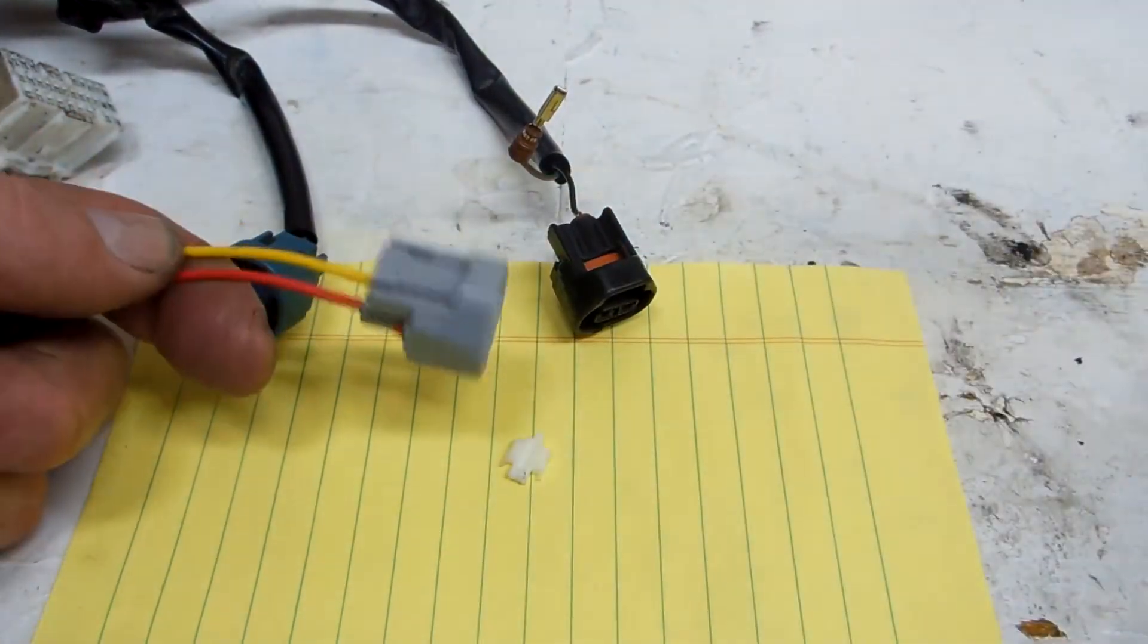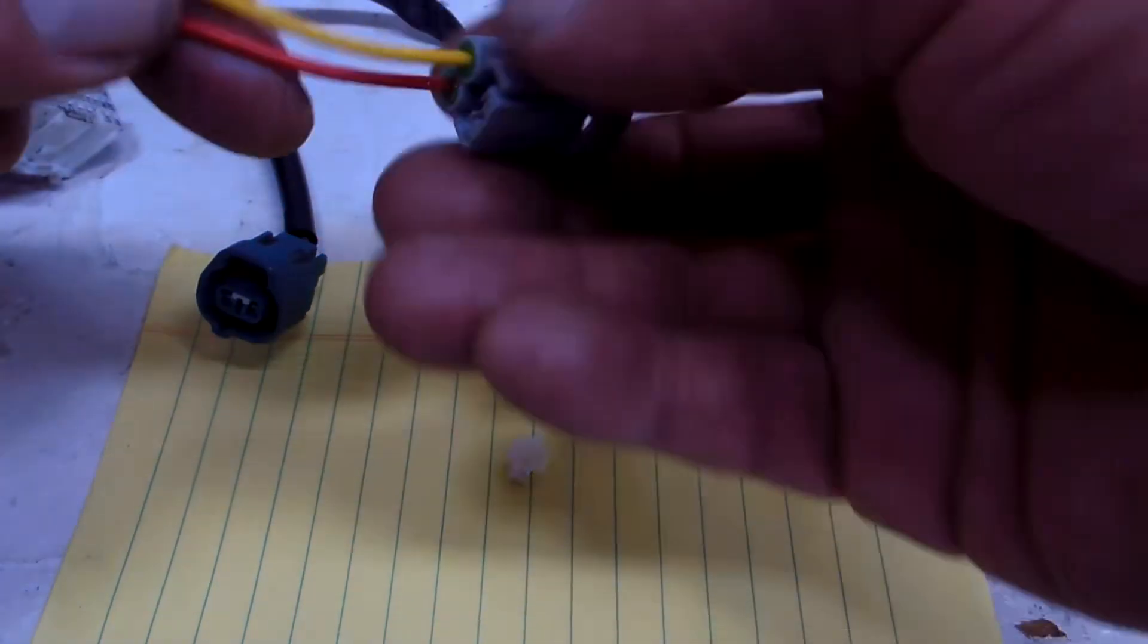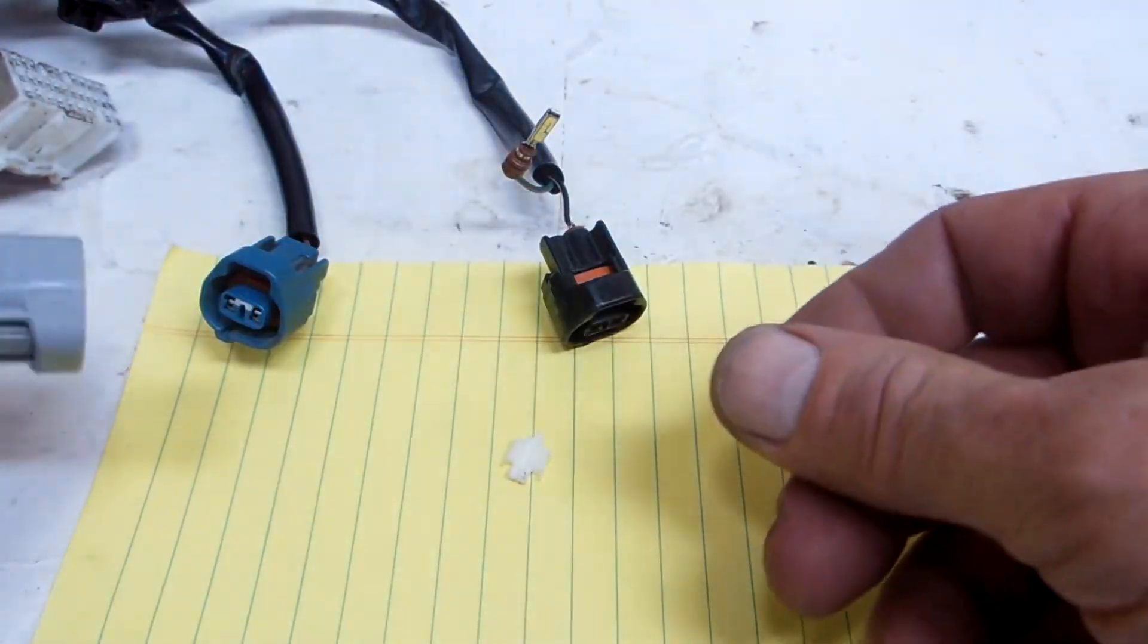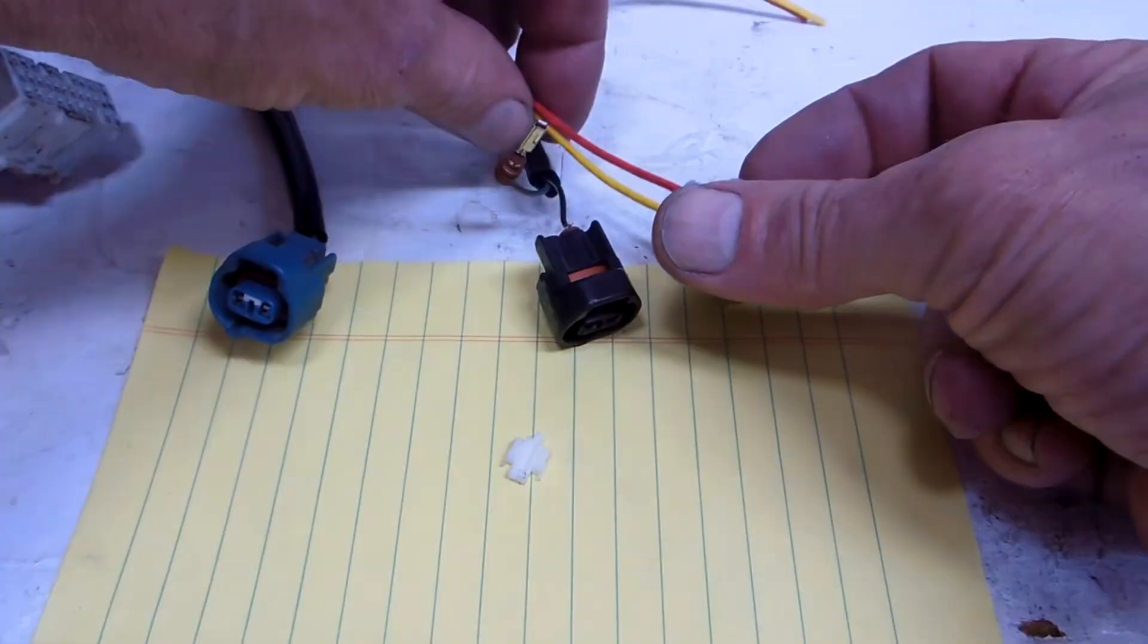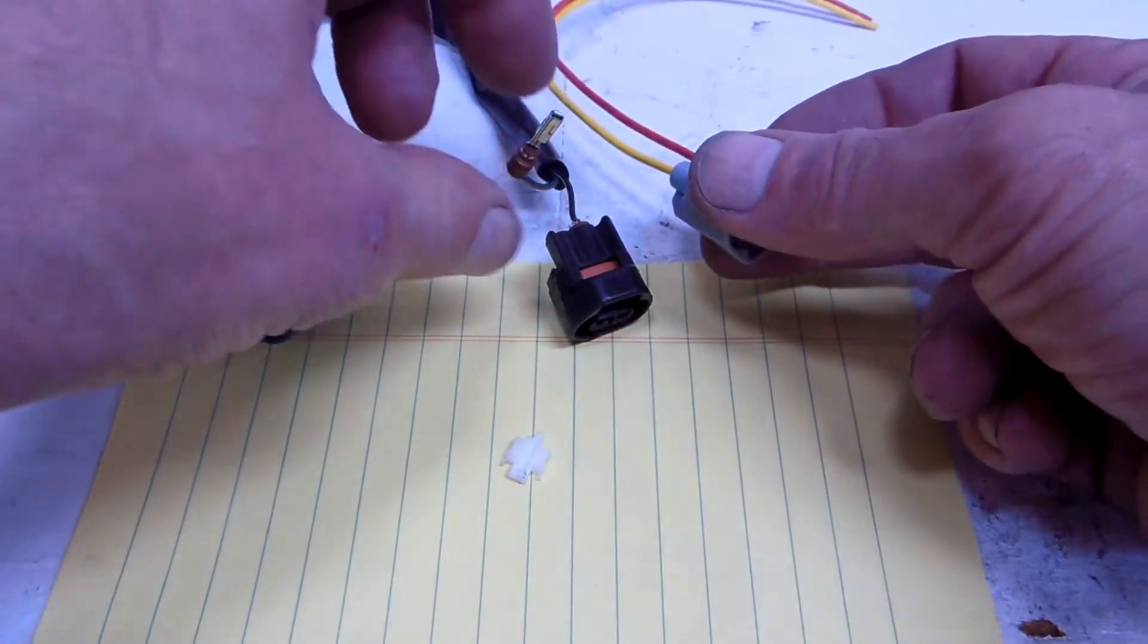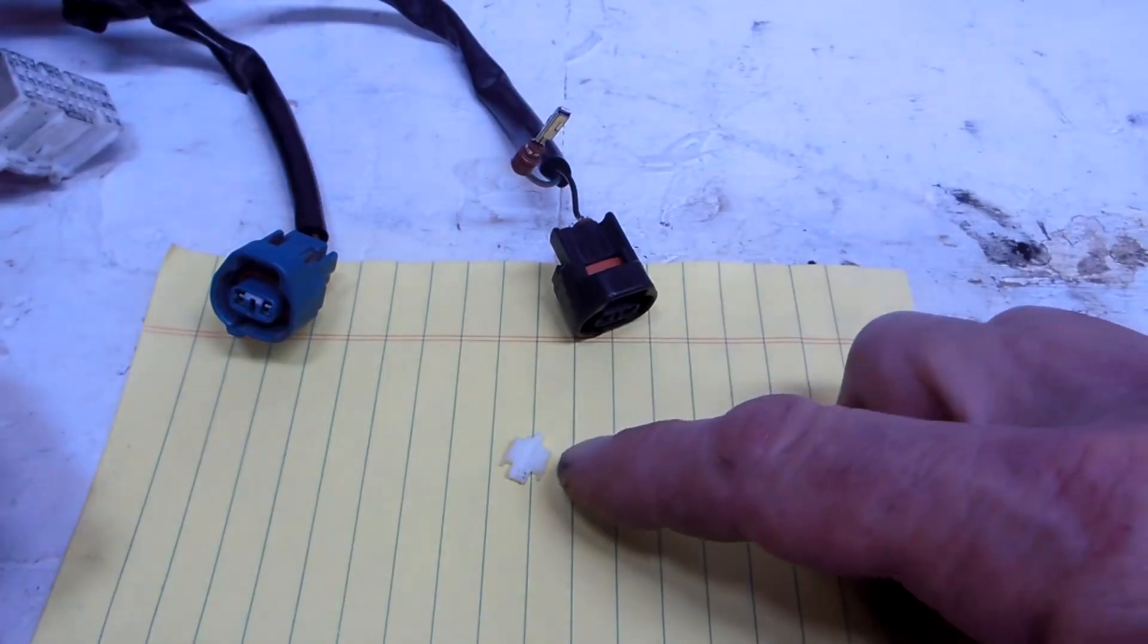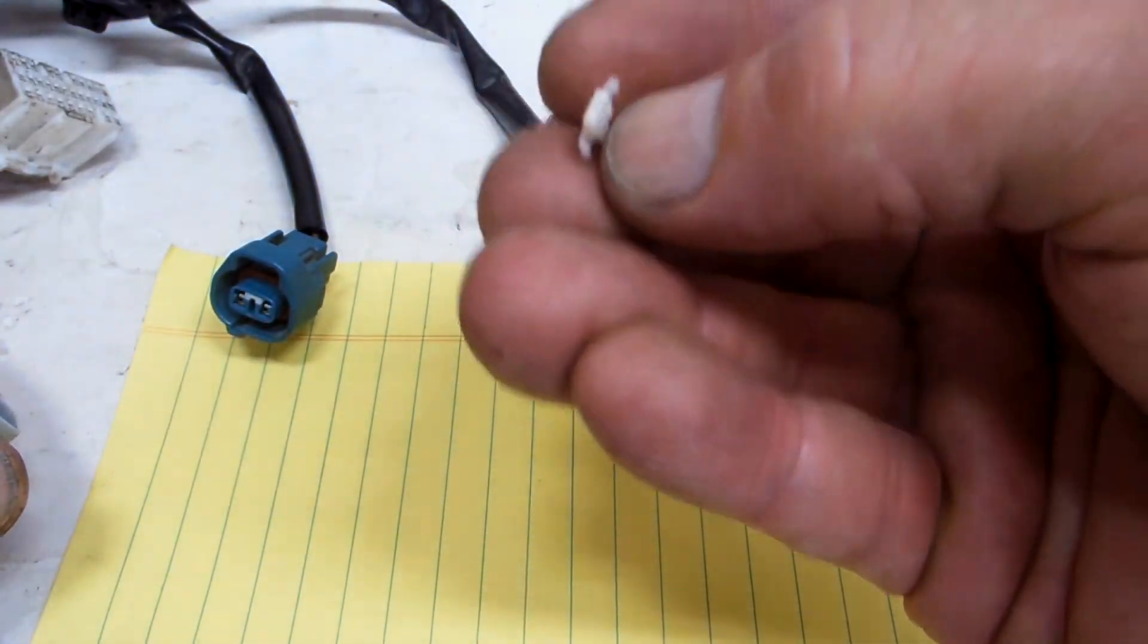So instead of cutting wires and kind of butchering your wiring, you can pull these out. This is already started on this one. I pulled one out, and this is a little plastic piece that's in there. Most of the Toyota connectors have this.